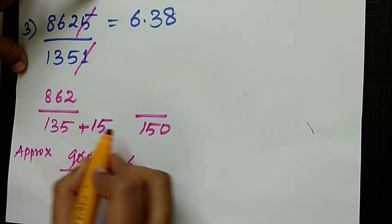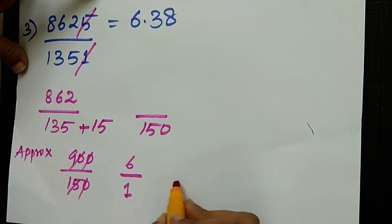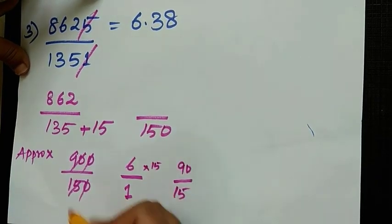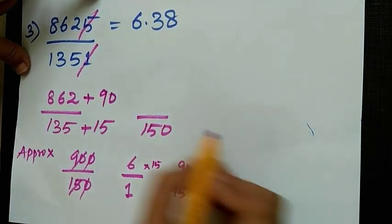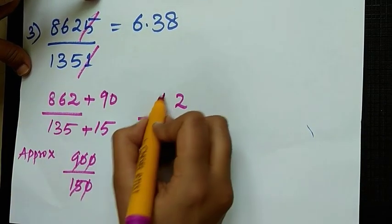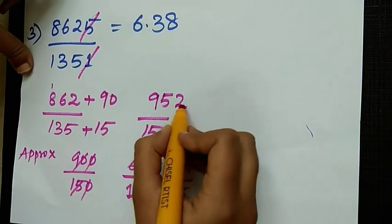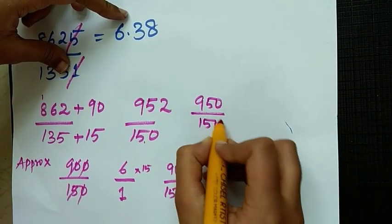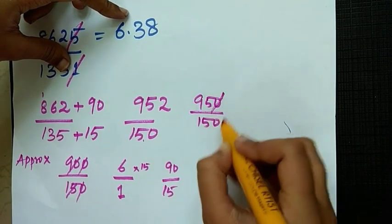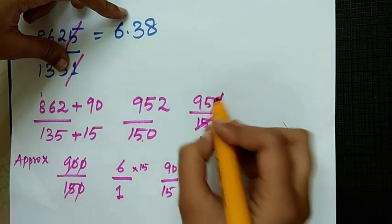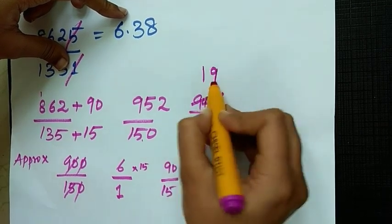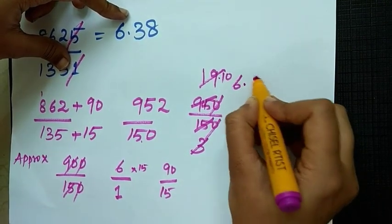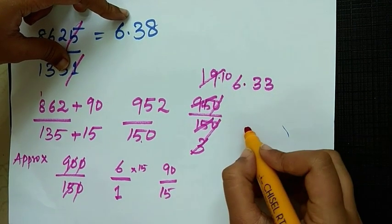Now we add 15. Then 15, then 15 into 6 equals 90. Plus 90: 2 plus 0 is 2, 9 plus 6 is 15, carry 1, 8 plus 1 is 9. So 952 by 150. Rounding off: 5 times 3 is 15, 5 times 1 is 5, 5 times 9 is 45, giving 19 by 3. Then 3 times 6 is 18, carry 1, giving 6.333. So the answer is approximately 6.33.